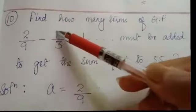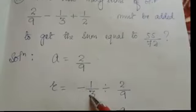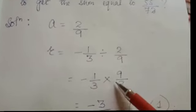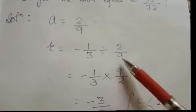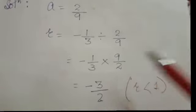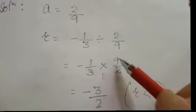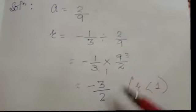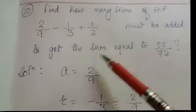The common ratio r is second term divided by first term: minus 1 by 3 divided by 2 by 9. Convert this division into multiplication: minus 1 by 3 into 9 by 2. Cancel — 3 ones are 3, 3 threes are 9 — so r equals minus 3 by 2. Since minus 3 by 2 is less than 1, suppose there are n terms.